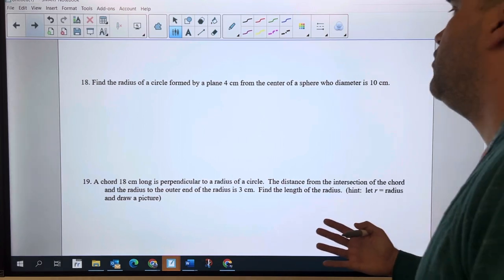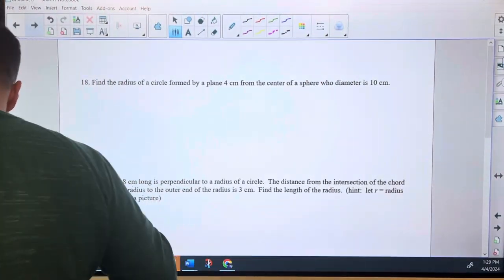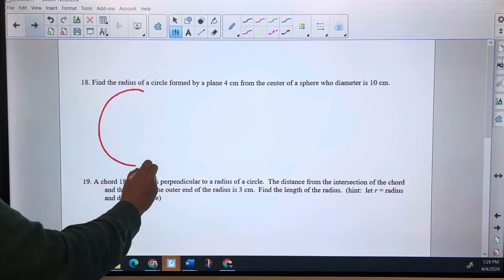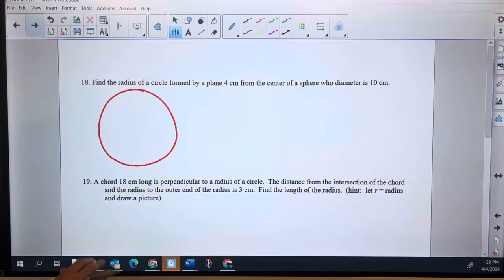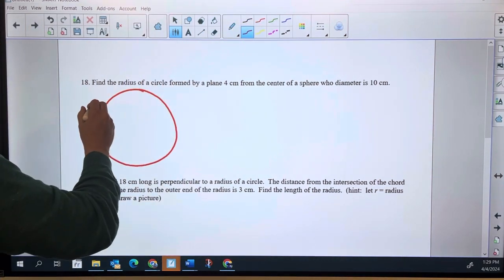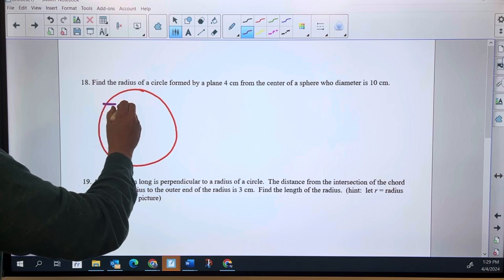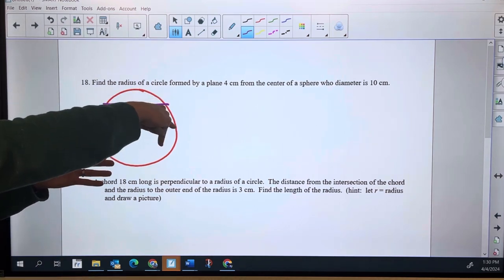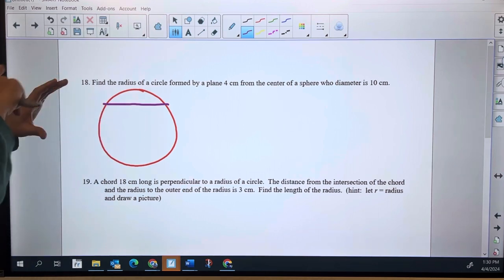Find the radius of a circle formed by a plane four centimeters from the center of a sphere with diameter 10 cm. So this is that diagram we talked about. This red is a sphere, they have to imagine that it's a three-dimensional shape, and then we're gonna take a cross section of it and cut it. That plane right there or cord, and that cord is actually a circle.